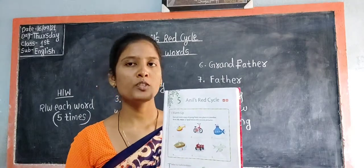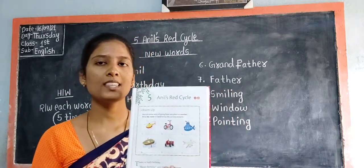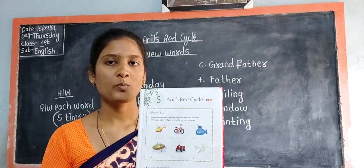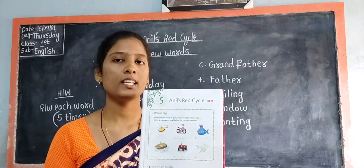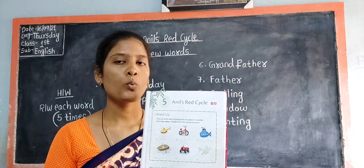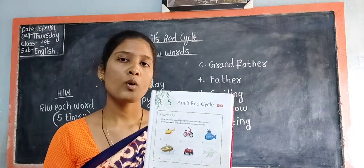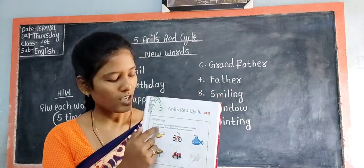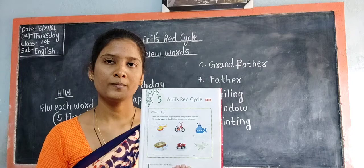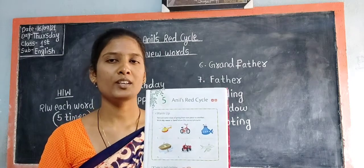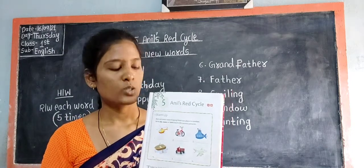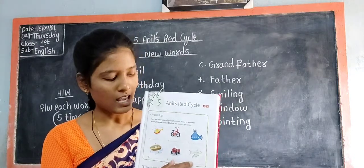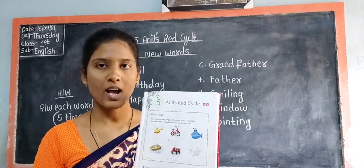Look at the sixth picture children. What can you see in the sixth picture? The sixth picture is of an aeroplane. So through which way does it move from one place to another — sky, water, or land? Sky. So write sky in the blank: S-K-Y. Sky.